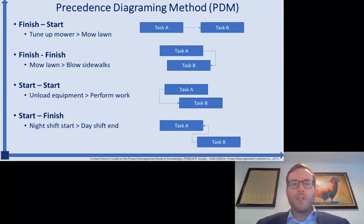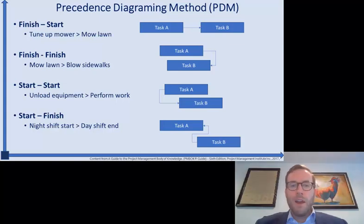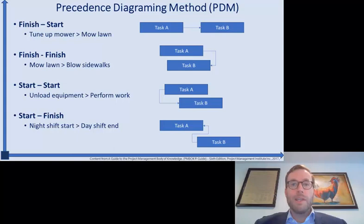We're going to talk about four relationship types. First, finish-to-start relationships, where the predecessor activity has to finish before the successor can start. Second, finish-to-finish relationships, where the predecessor has to finish before the successor can finish. Third, start-to-start, where the predecessor activity must start before the successor activity can start. And finally, a start-to-finish relationship type, where the successor activity must start before the predecessor, the first activity, can officially finish.